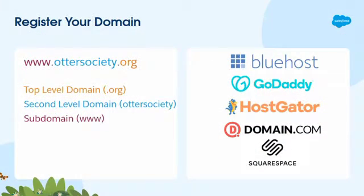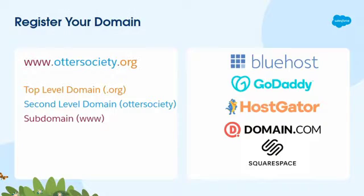First things first, register your domain. What is a domain name? Basically, the internet — when computers are talking to each other about serving websites — they're using what's called an IP address, which is a long string of numbers and letters that humans can't understand. So we've replaced that system with what's called a domain name, which is a human-readable name — in this case, www.ottersociety.org.